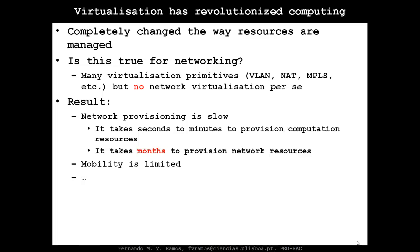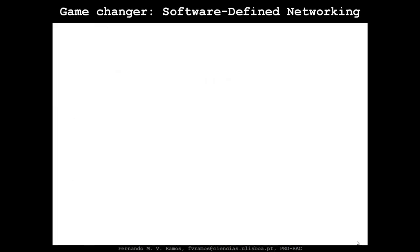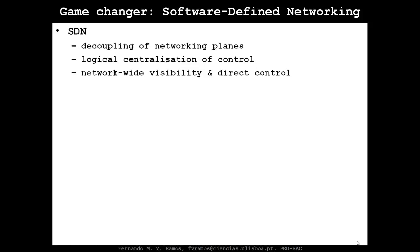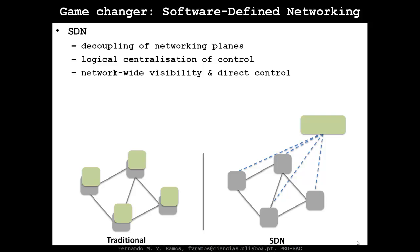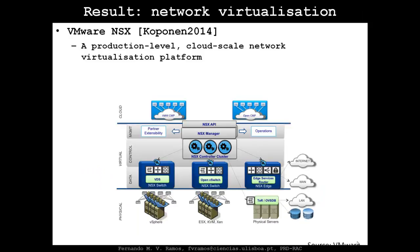Many other problems occur because we don't really have full network virtualization — until recently, we didn't. The game changer in this aspect, as in others, has been software-defined networking, this new paradigm in networking we've been discussing throughout this course. With SDN, by decoupling the networking planes — by removing the control plane from the switches and logically centralizing control in an SDN controller — we gain network-wide visibility and direct control over all equipment. And that has basically enabled complete network virtualization.